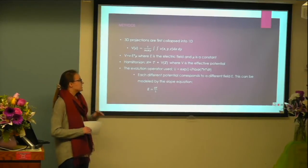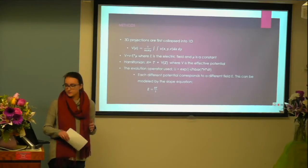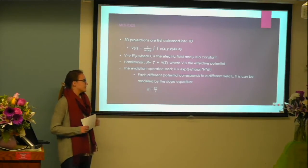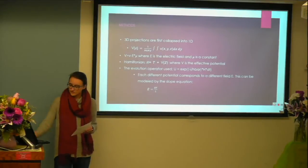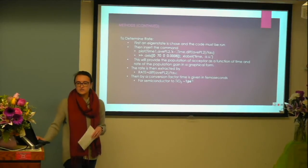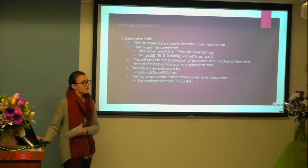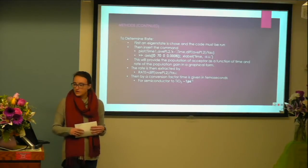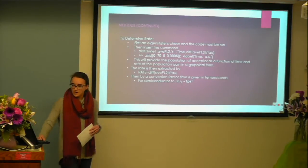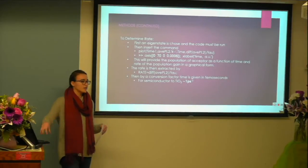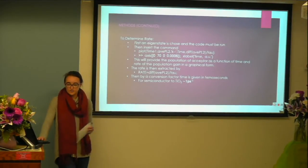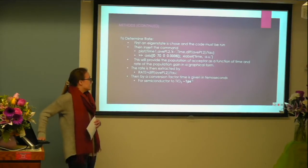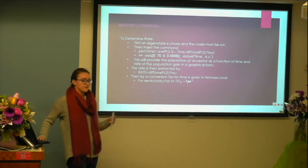The probability of finding the electron in a specific space is dependent on our applied potential, because our evolution operator is dependent on the Hamiltonian, which is dependent on the potential. Each different potential corresponds to a different electric field. In the plots, we see a direct relationship between change in potential and electric field. To get a rate determining how our electron moves in and out of the semiconductor, we choose an eigenstate and run our code, then plot a graph showing population of electrons in the accepting agent versus the semiconductor as a function of time.